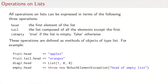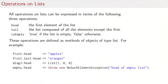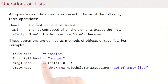From last week, there are three fundamental operations on lists from which all others can be expressed. They are: isEmpty — returns true if the list is empty, false otherwise; head — returns the first element, throws an exception if the list is empty; and tail — returns the list of all elements except the first. These are defined as methods on list objects. For example, 'fruit.head' gives 'apple', 'fruit.tail.head' gives 'oranges', and 'diagonalThree.head' gives List(1, 0, 0).